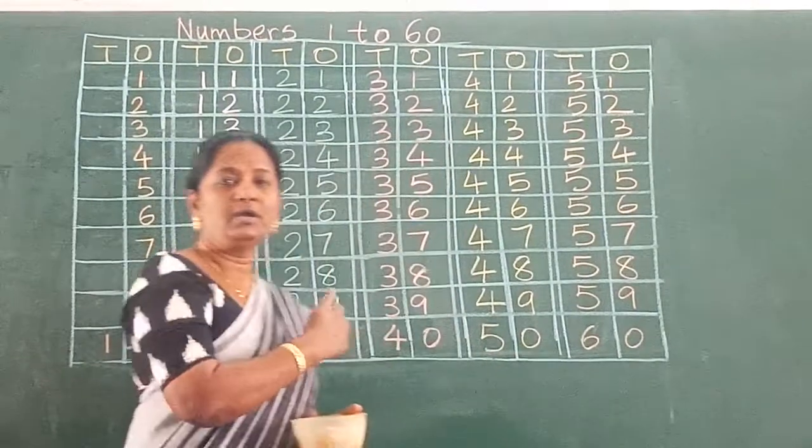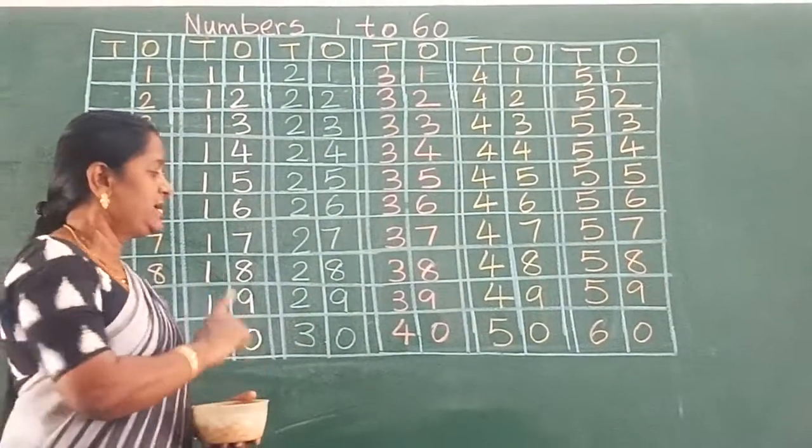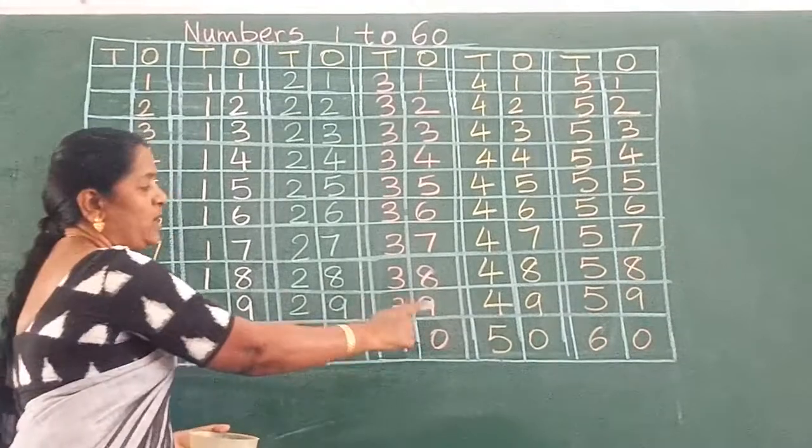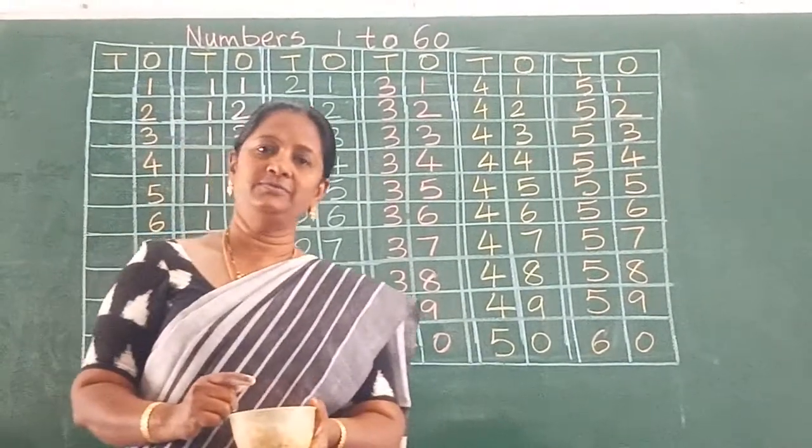So this is how you all need to write children. Say and write numbers from 1 to 60. Okay children, thank you.